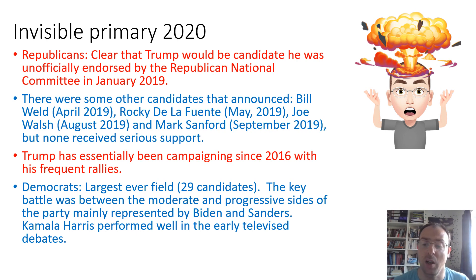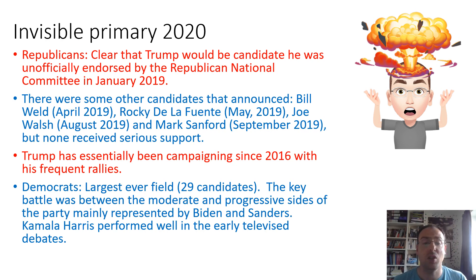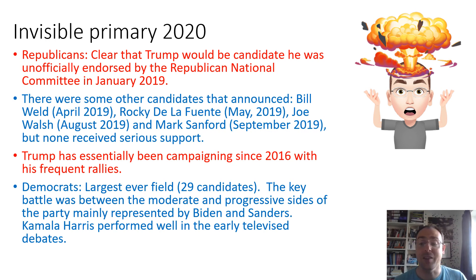He causes a bit of a media storm and goes and says things that capture headlines. In terms of the Democrats, the invisible primaries in 2020 were really interesting because they had their largest field ever — about 29 candidates. The key battle was between the moderate and progressive sides of the Democrat Party, which is quite a divided party on a number of issues. The moderate side was mainly represented by Biden and the progressive side was largely represented by Sanders, and those two really emerged coming into the primaries.